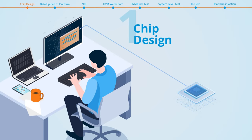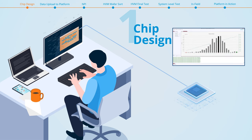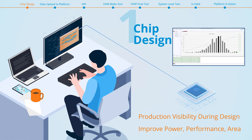The Proteantix solution starts during chip design, where your designers utilize powerful simulation engines to perform extensive analysis of frequency and power across hundreds of process points, voltages and temperatures. Further analysis provides the full production distribution view of your chip, leading your design team to make better decisions for improved power, performance, area and parametric yield.